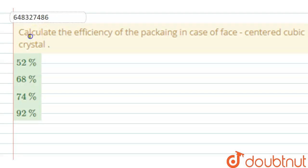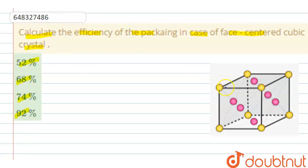Dear students, question is: calculate the efficiency of the packing in case of face-centered cubic crystal. Is it 52%, 68%, 74%, or 92%? As you know, FCC unit cell is like this - all corners are occupied by atoms and also the atoms are present in all face centers.